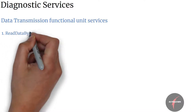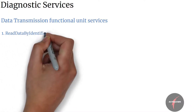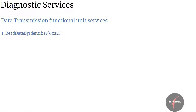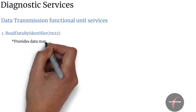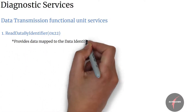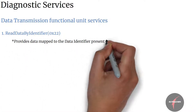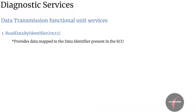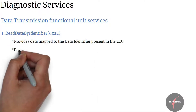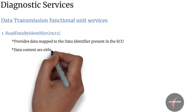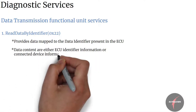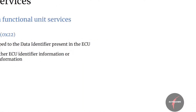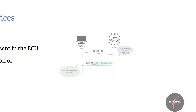Firstly, we have read data by identifier. As the name implies, this service would provide the data mapped to the data identifier present in the ECU. All the services in read data by identifier are either used to access ECU identifier information or connected device information from the ECU.